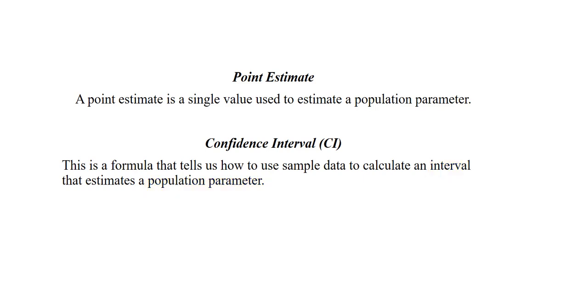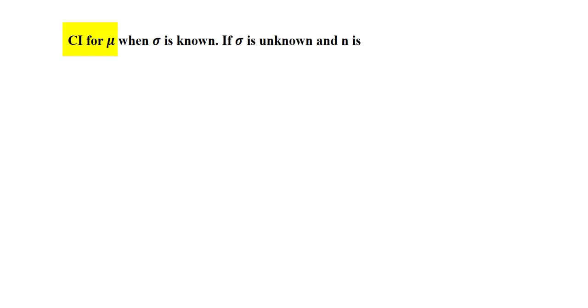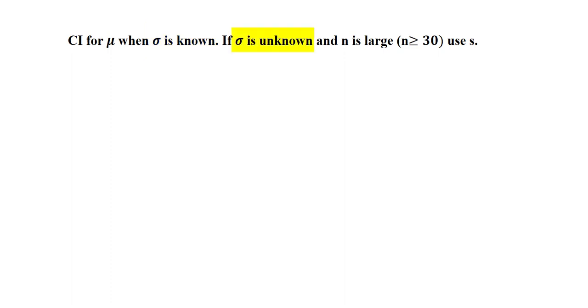We start by constructing a confidence interval for the population mean when the population standard deviation is known. In this case, if the population standard deviation sigma is unknown and our sample size n is large — that is, n is greater than or equal to 30 — we can use S, the sample standard deviation, in place of sigma.